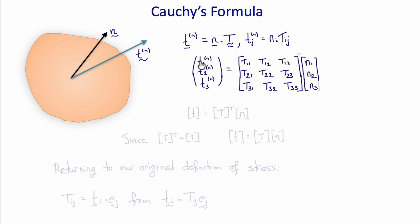Now notice that I changed the order of this formula here. That's because this formula is equivalent to, in matrix notation, t equals t transpose n. But since we've already seen that the stress tensor is symmetric, then that's the same mathematically as t equals t n.